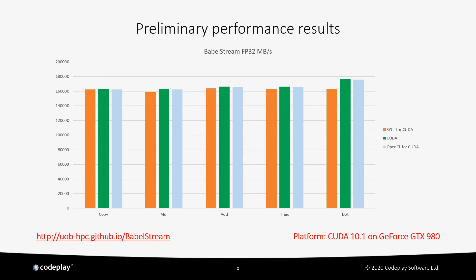Here we can see some preliminary performance results from a local build, using BabelStream 3.4, CUDA 10.1, with a GeForce GTX 980. The bands represent bandwidth, so higher is better. The orange is the DPC++ CUDA backend, green is plain CUDA, and light blue is OpenCL stream running on CUDA. There is still a slight performance gap compared to native CUDA, but the difference for everything except DOT is less than 10%. Note that this is still early work.